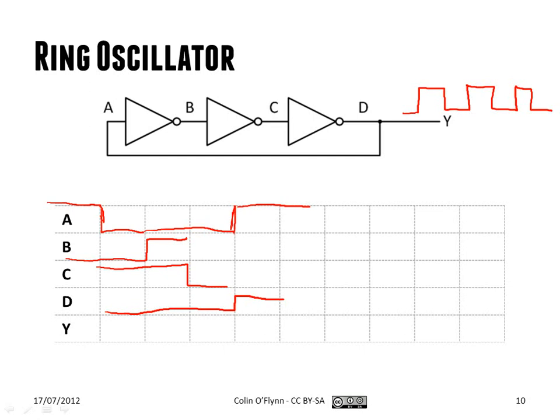And then there's a delay before the output D changes, feeds back to A, changes, delay, changes, et cetera. So this will result in a square wave output. And the more gate delay you add, the longer this period becomes. And then the lower the frequency will be.